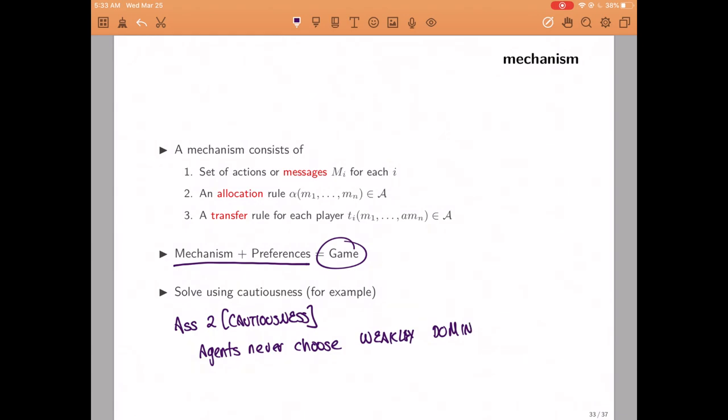Because in mechanism design we get to design the game ourselves, we often can work with very robust solution concepts like cautiousness instead of relying on more restrictive assumptions such as rationalizability or equilibrium.